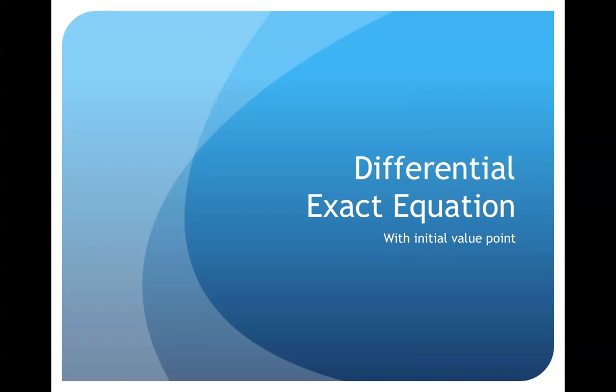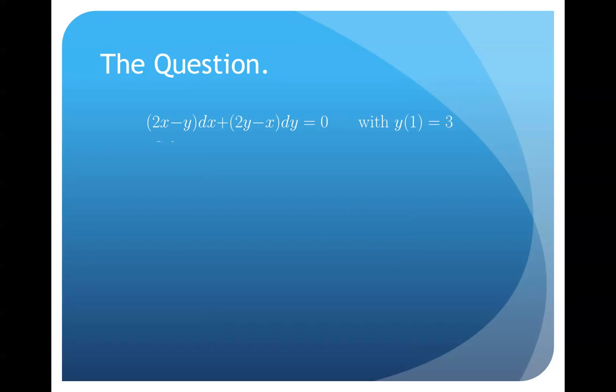Let's get to the question. Our question is going to look like a total differential from calculus. It is 2x minus y dx plus 2y minus x dy equal to 0. And the initial value is when x equals 1, y will equal 3.